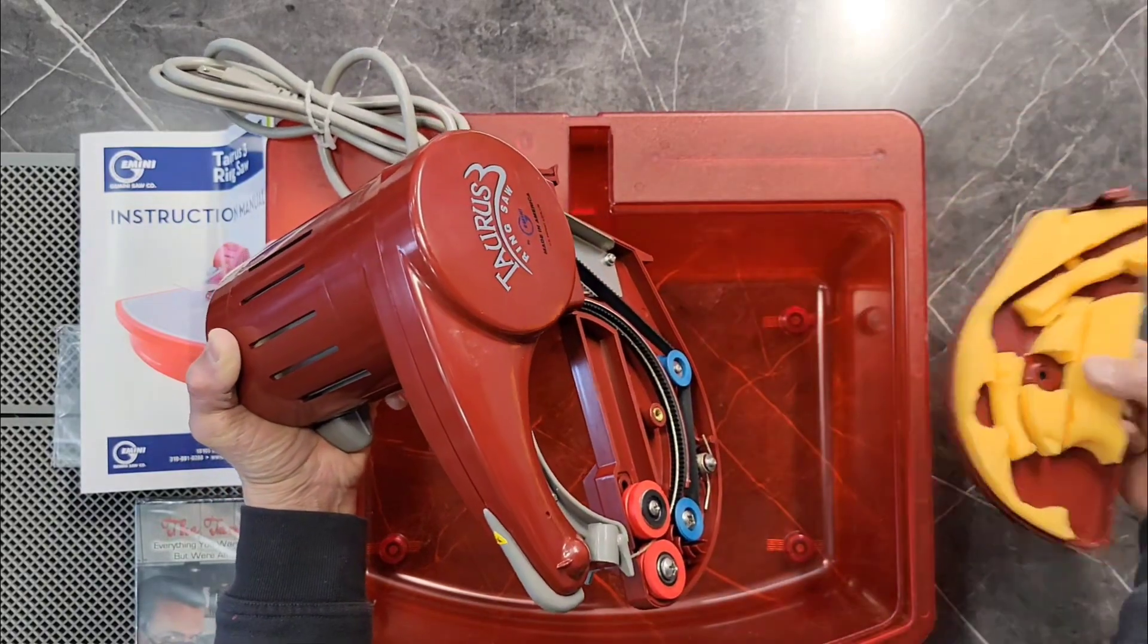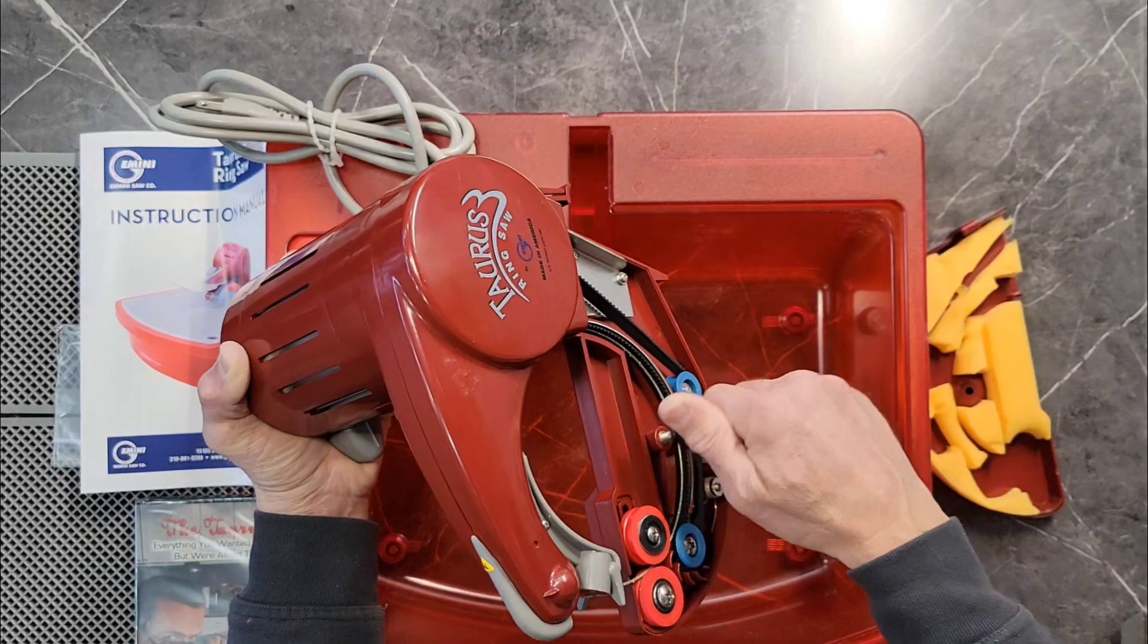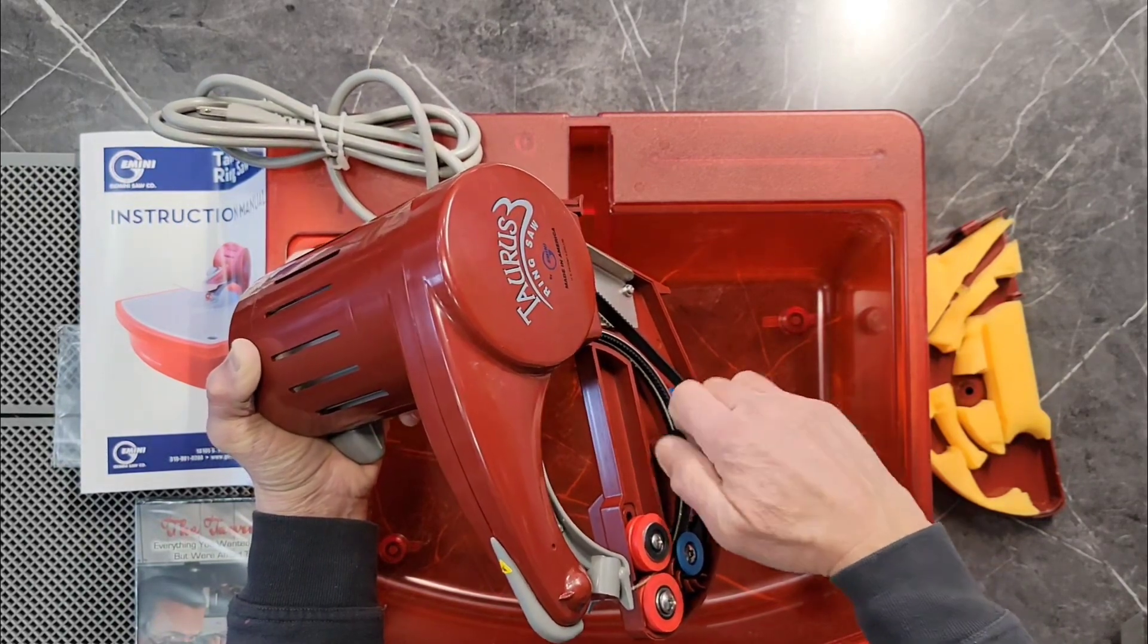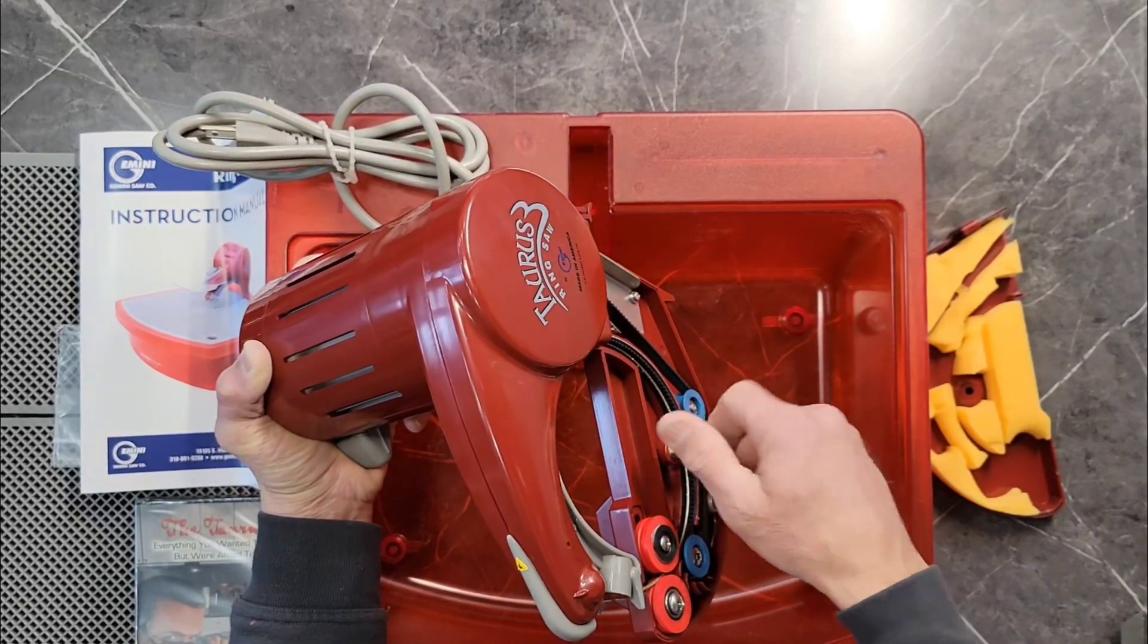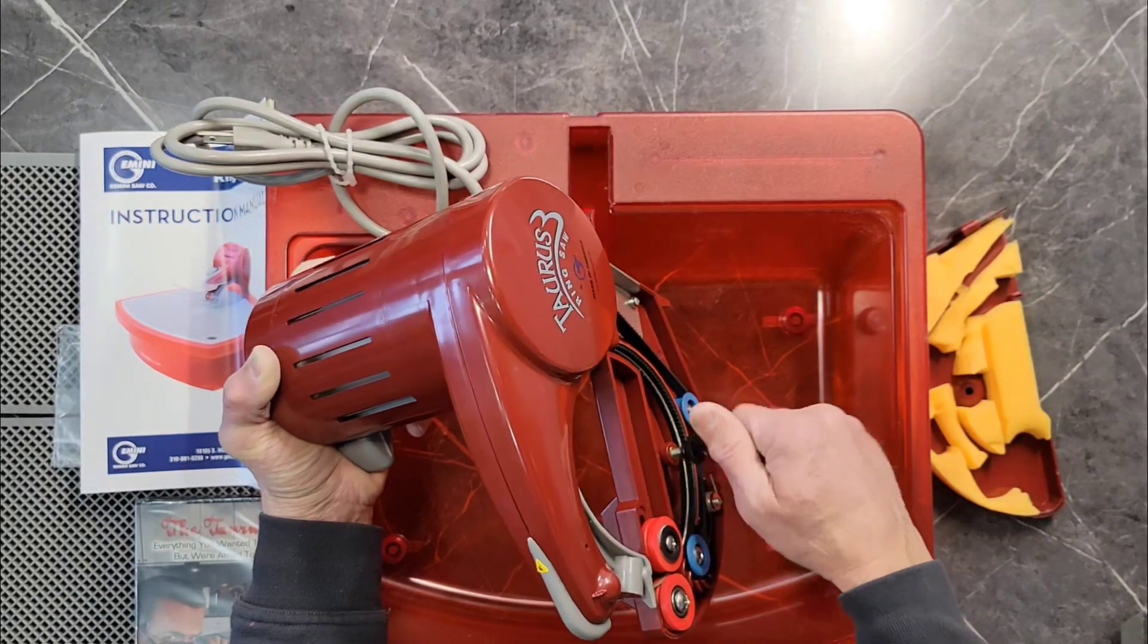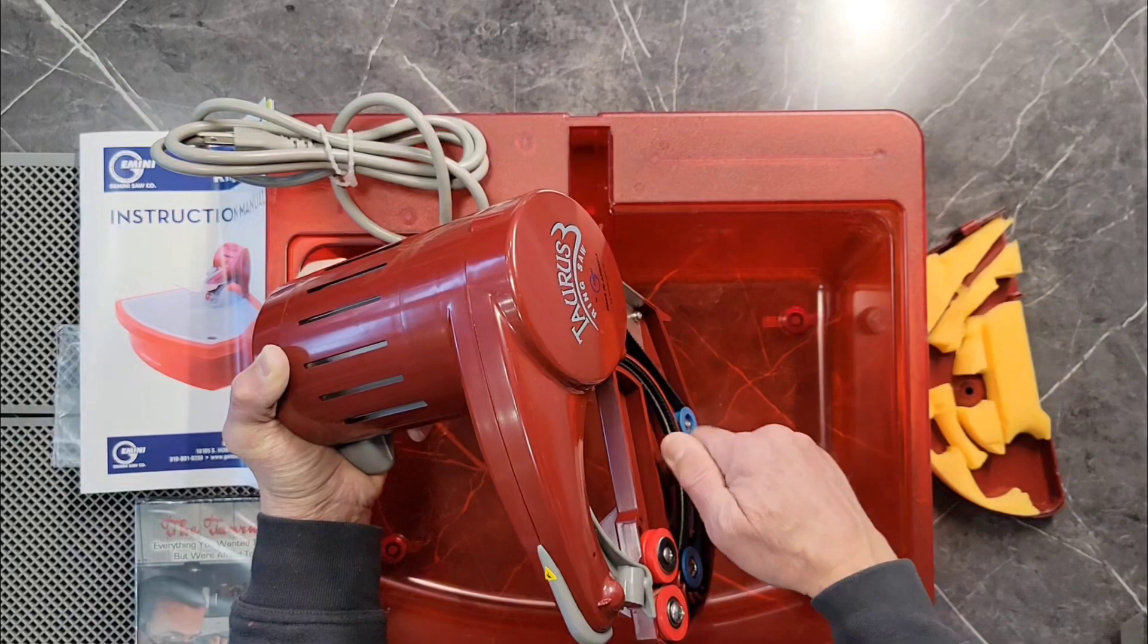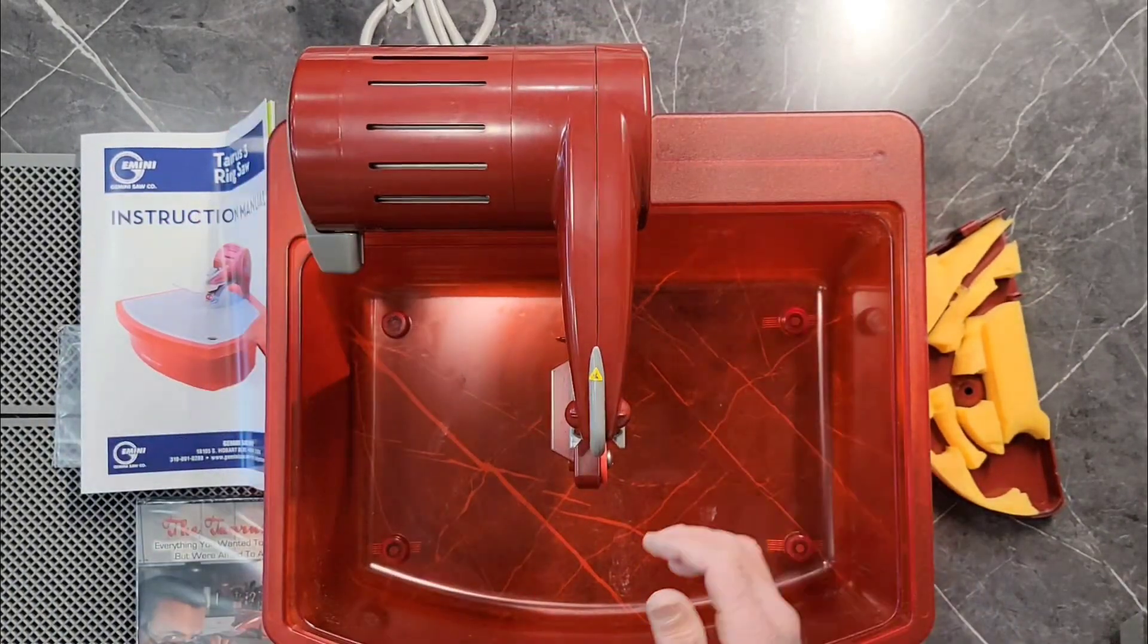So we'll take this and put this off to the side. Thumb turn we can put back in here or put it in a bag and keep it to the side. I would probably recommend putting some anti-seize lubricant on the threads of the thumb turn so that if any water happens to get on there, it doesn't cause any rusting. And then this will just snap into here like so.